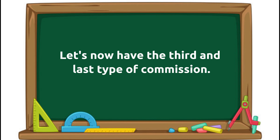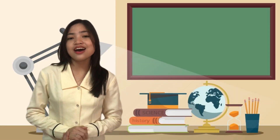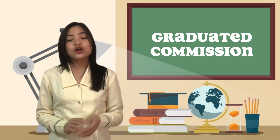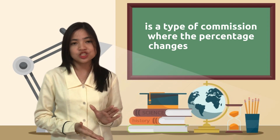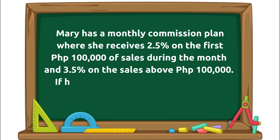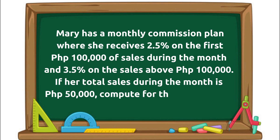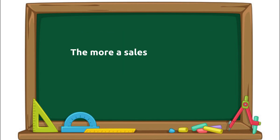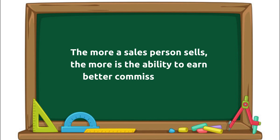Let's now have the third and last type of commission — graduated commission. Graduated commission is a type of commission where the percentage changes based on how much someone sells. It is called graduated because it has a structure that gradually increases as the worker sells more. The more a salesperson sells, the more is the ability to earn better commission rates.